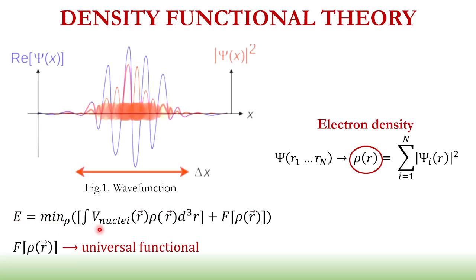And to do that, we interact our electron density, which is given by ρ as a function of the space coordinates r, and we interact this with the nuclei and add a certain universal functional.